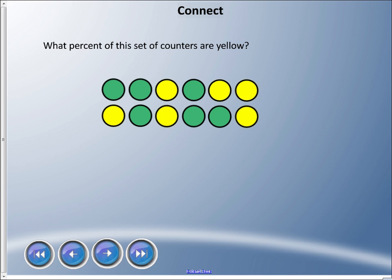What percent of this set of counters are yellow? First thing we should figure out is how many counters do I have. I have two rows of six, so it's out of 12. And that are yellow: one, two, three, four, five, six. Six out of 12. Now, can we change this 12 into 100? We cannot.